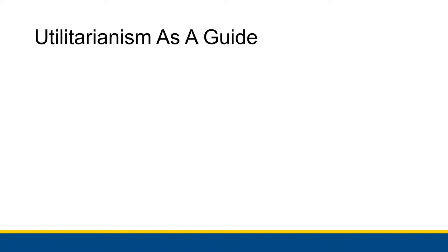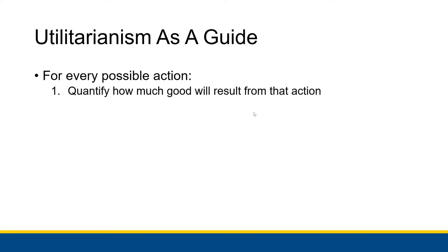Utilitarianism, on paper, sounds like a good idea. You want to cause more good than bad, minimize harm, and maximize happiness. So let's look at how we would use utilitarianism as a guide. For every possible action you could take to address a situation — say you have three different choices when faced with a problem — for each choice you have to quantify how much good will result from that action and how much bad will result, since any action could have negative as well as positive consequences.